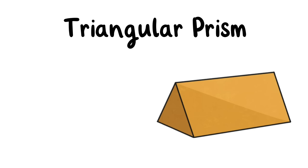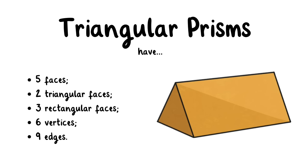This is a triangular prism. Triangular prisms have five faces, two triangular faces, three rectangular faces, six vertices, and nine edges.